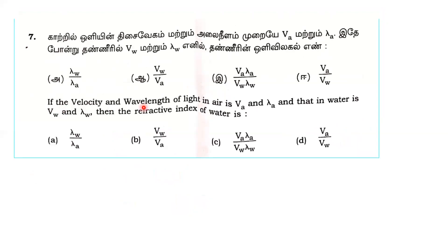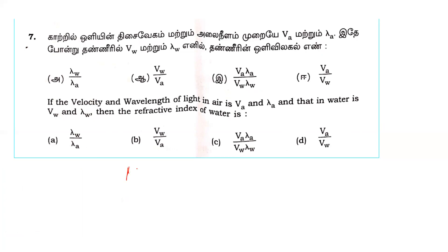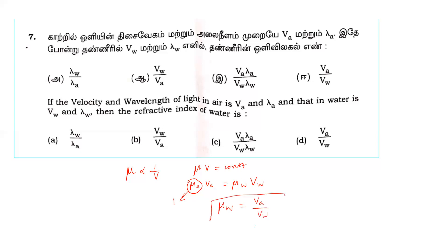Next question: if the velocity and wavelength of light in air are V_A and lambda_A, and in water are V_W and lambda_W, then the refractive index of water. Since refractive index times velocity is constant, and refractive index of air is 1, the refractive index of water equals velocity in air divided by velocity in water, i.e., V_A over V_W.